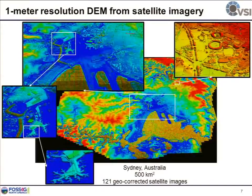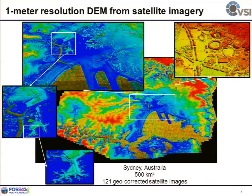This is a much larger region — 500 square kilometers in the downtown region of Sydney, Australia. We used 120 geo-corrected satellite images. Here you can see all the trees along the parkways are visible, and all the gyms, stadiums, and buildings are visible as well — even the planes parking next to the boarding gates of the airport.